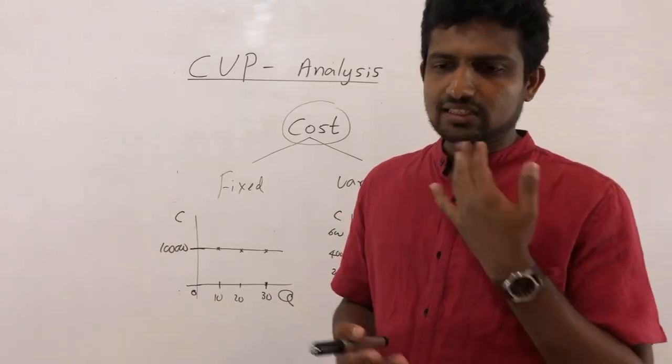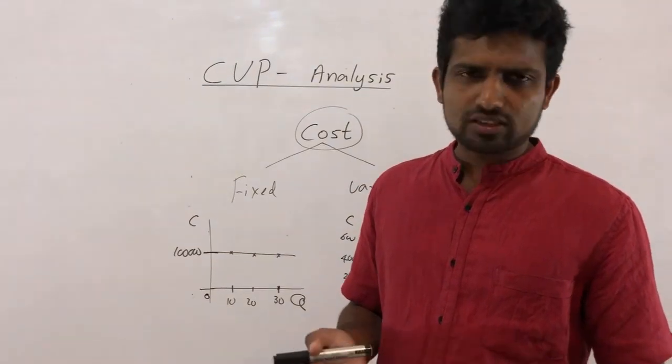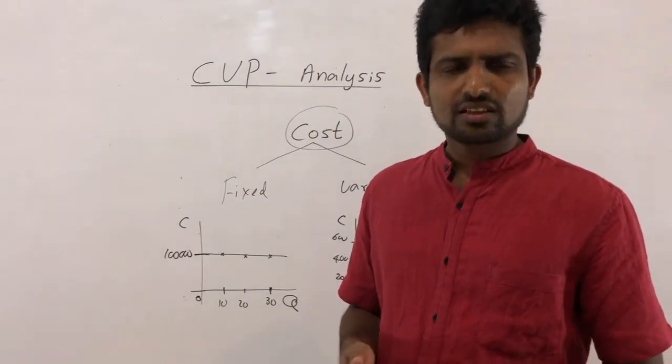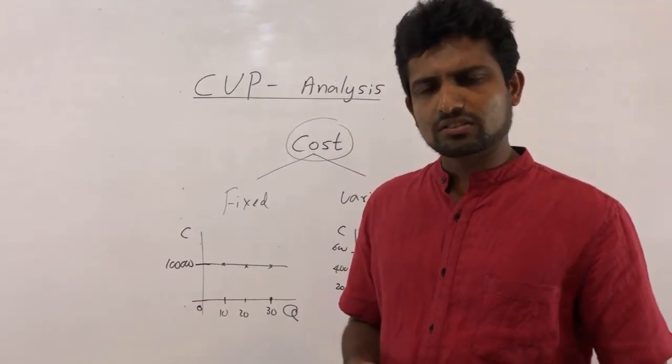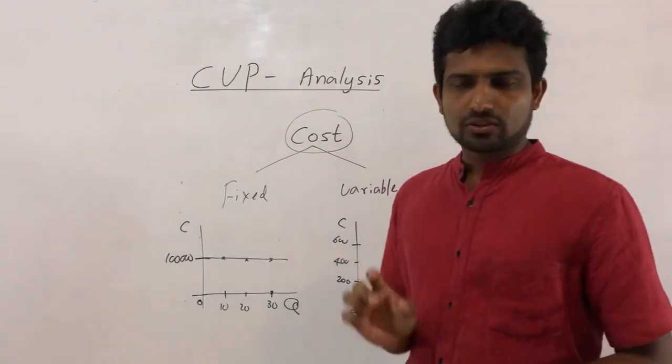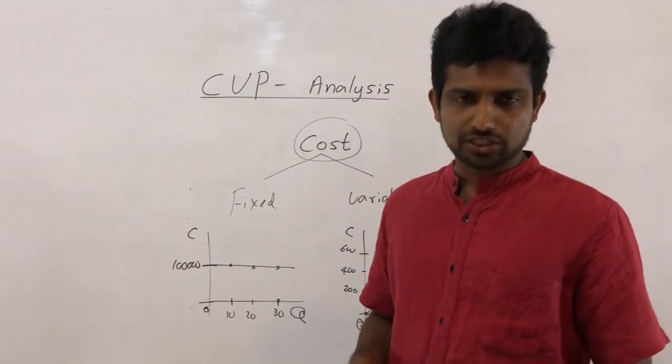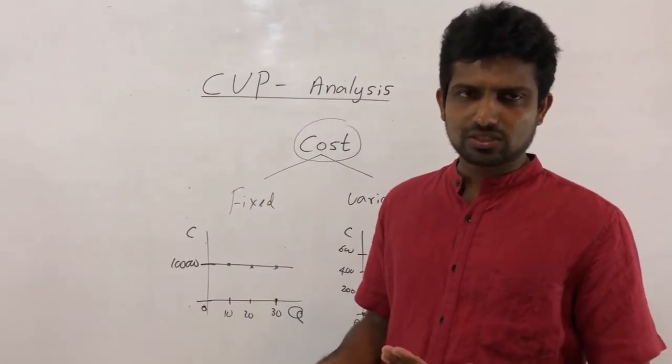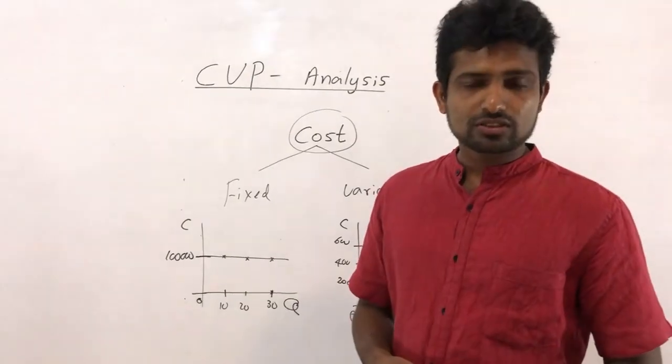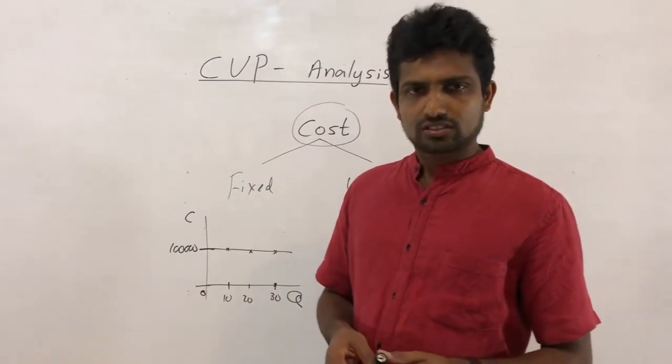As an example, supervisors salary paid for the supervisors, what is that? That is fixed anyway. Electricity, usually that is fixed cost. And water, that also fixed. And for the variable cost, what are the examples? Direct labor cost, or the labor cost, the salary paid for the production people, production employees. Those are the variable costs.